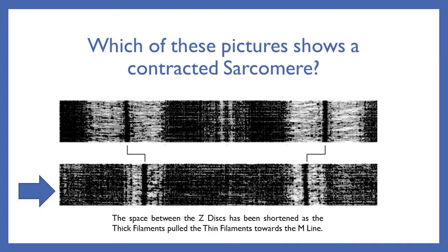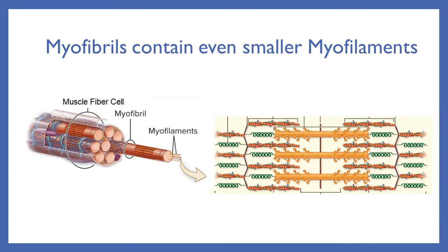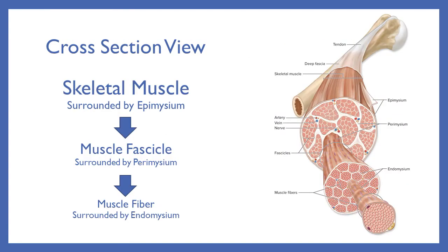The sarcomere itself has shortened. A single sarcomere shortening doesn't really have an effect, but if every single sarcomere inside of a myofibril contracts, and every myofibril rod contracts inside of a muscle fiber cell, and if all of your muscle fiber cells are contracting, we can then cause the entire muscle to contract and shorten, providing movement.